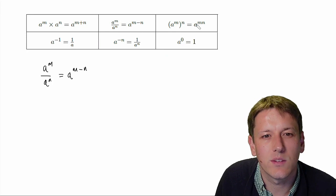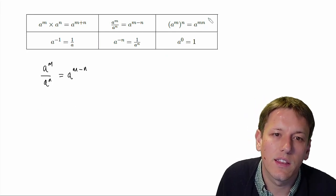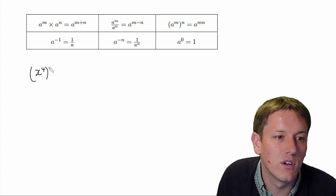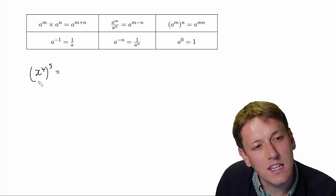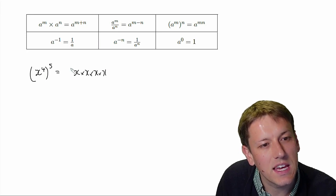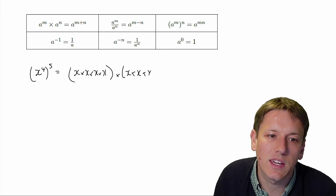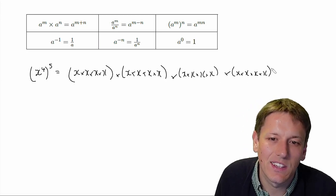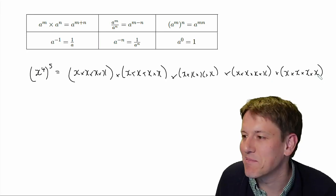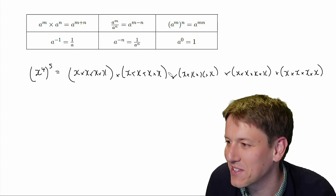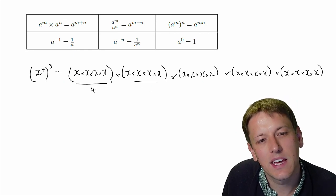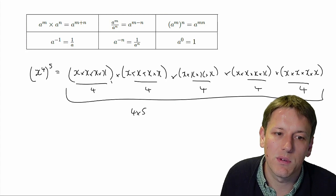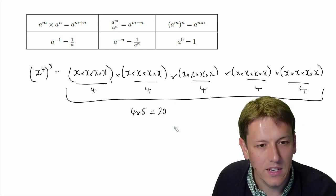But first, let's look at A to the M to the N equals A to the M times N — this third rule. An example would be X to the 4, all to the power of 5, giving X to the 20. The reason is I'm taking X to the 4, which is X times X times X times X, and multiplying that whole thing by itself five times. I've got four X's here, four here, four, four, and four — done five times overall. So the total number of X's is four times five, which is 20. That's where this rule comes from.